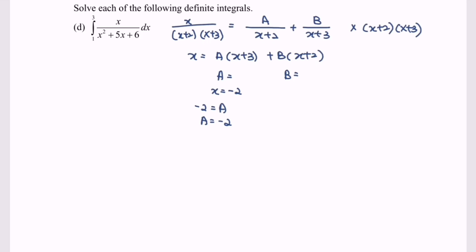Next, we are looking for B. In order to find B, we substitute x equals negative 3 to eliminate A. We will have negative 3 equals negative B, so B equals 3.